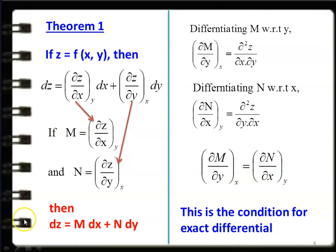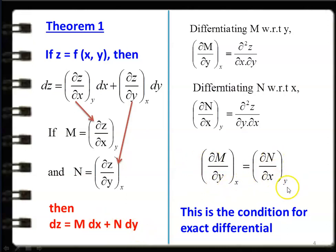So the theorem number 1 — what we have to remember: dz = M dx + N dy, then ∂M/∂y at constant x = ∂N/∂x at constant y. This is the condition, and these two equations we have to remember for Theorem 1.